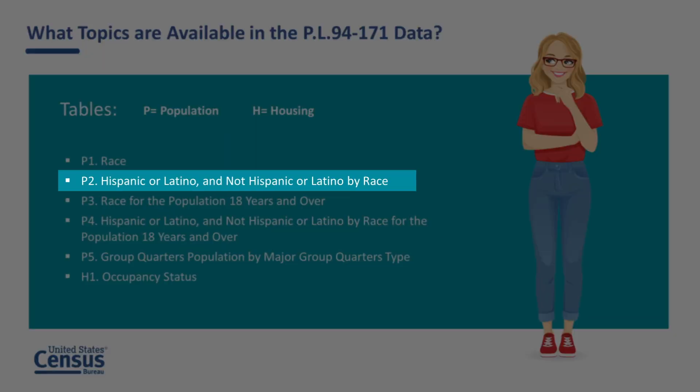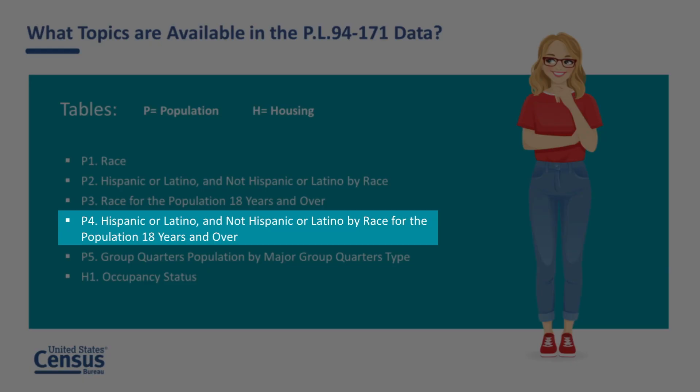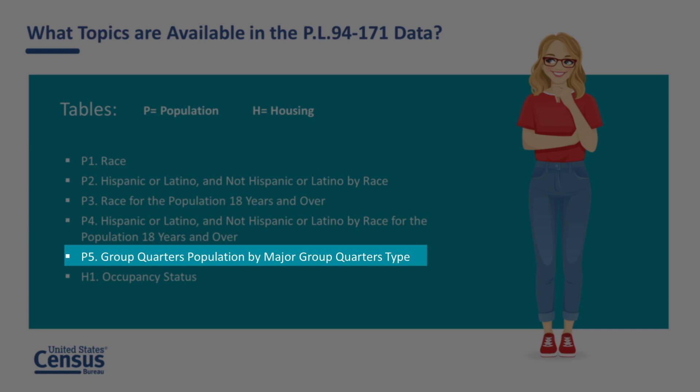The P2 table presents data for Hispanic or Latino and not Hispanic or Latino by race. The P3 table presents race for the population 18 years and over. The P4 table presents Hispanic or Latino and not Hispanic or Latino by race for the population 18 years and over.